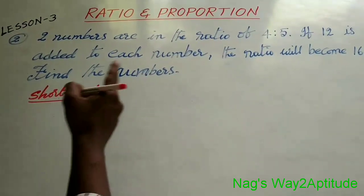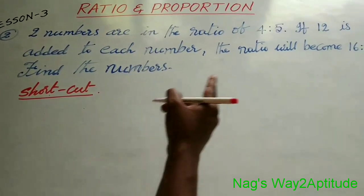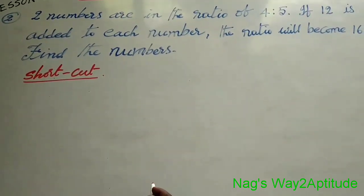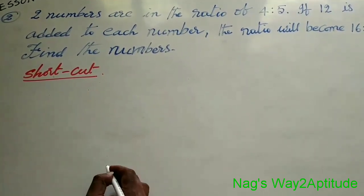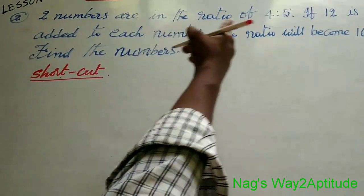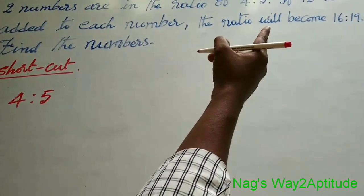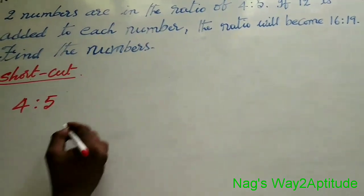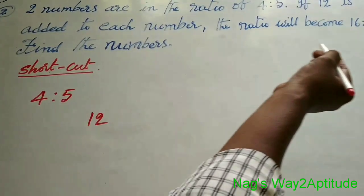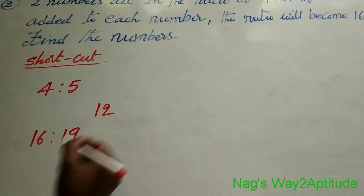Now let's take another problem. Two numbers are in the ratio of 4 is to 5. If 12 is added to each number, the ratio will become 16 is to 19. Find the numbers. Just like in the previous problem, let's approach using the shortcut method. First, you take the original ratio: 4 is to 5. To each number, 12 should be added. So you take this 12 here.